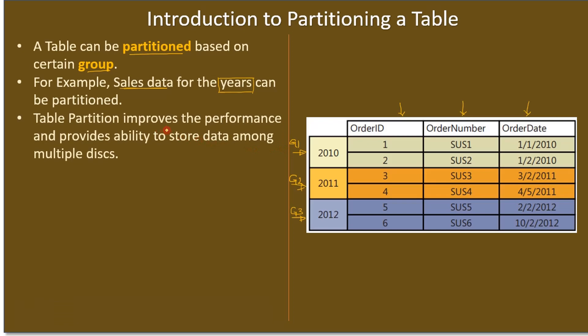Table partition improves performance and provides the ability to store data among multiple disks. Since we split the data into groups, if you see, this is a single table, a Sales Record table. Since we grouped the records in three groups, we can store these groups of data in different disks, which will improve the performance. For example,